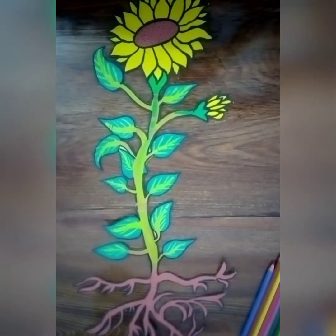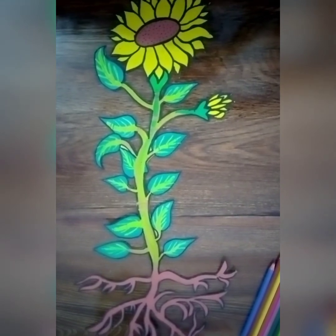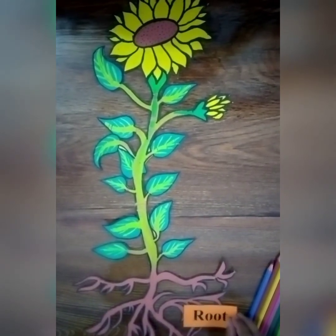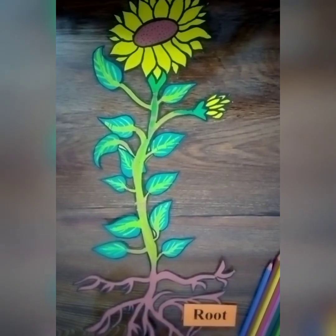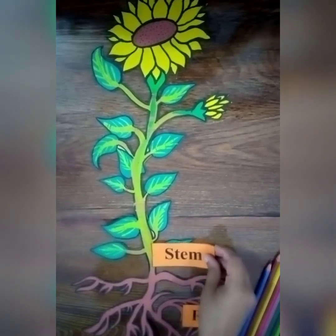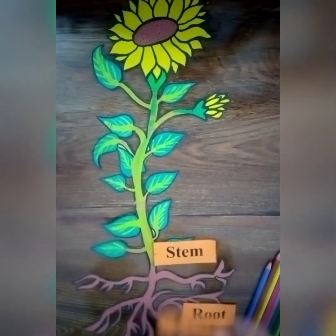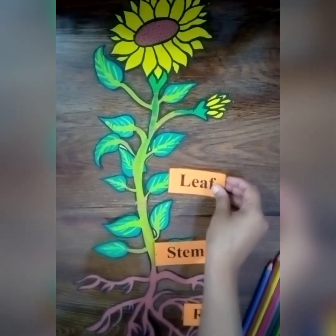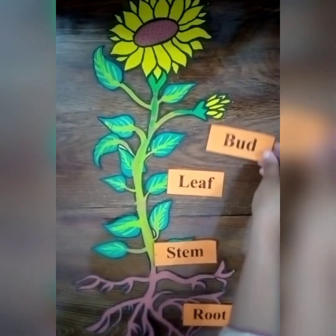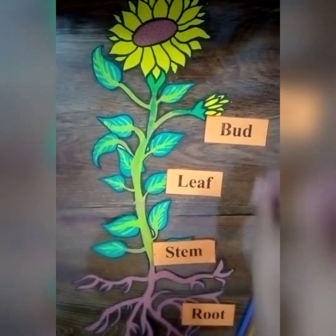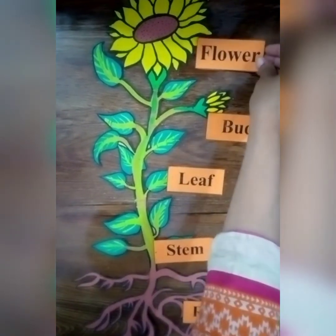Now let's have a look at the different parts of a plant: root, stem, leaf, bud, and flower.